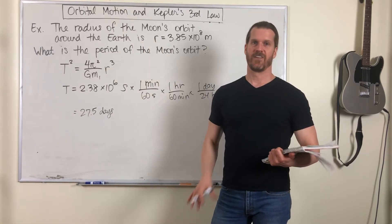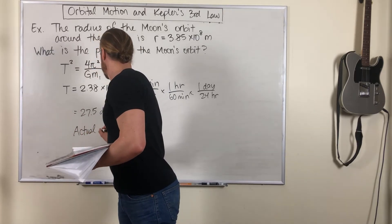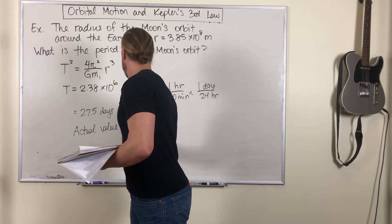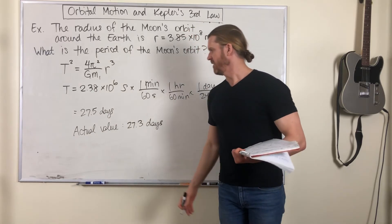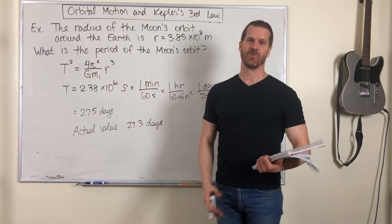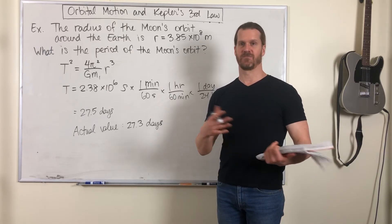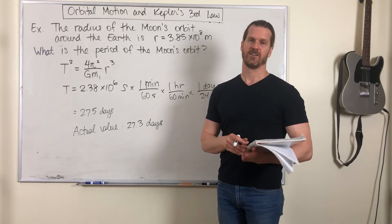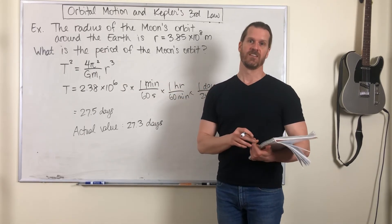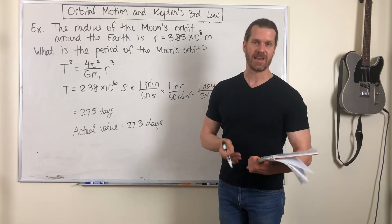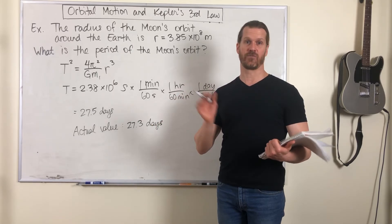Now the actual value is 27.3 days. This actual value, we could model if we knew tons more physics. You'd have to study elliptical orbits, you'd have to consider the variations in orbital radius, the irregularities of shape of planet earth, the influence of the sun, it would get super complicated.